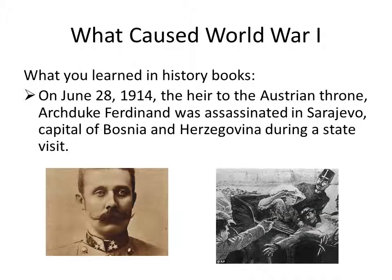So what caused World War I? If you remember back to your high school history classes, you may not have even covered this. But on June 28, 1914, the heir to the Austrian throne, Archduke Franz Ferdinand, was assassinated in Sarajevo, which was the capital of Bosnia and Herzegovina, during a state visit. Here's Franz Ferdinand with his awesome mustache, and here is an artist's rendering of the actual assassination based on pictures.